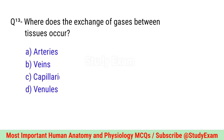Question number thirteen. Where does the exchange of gases between blood and tissues occur? Correct option is C. Capillaries.